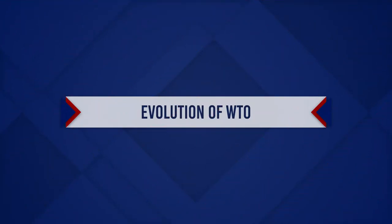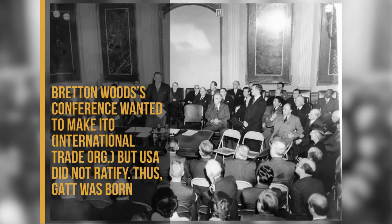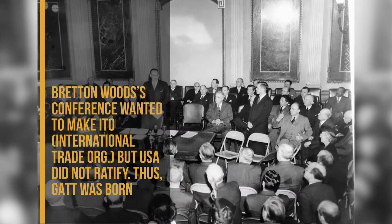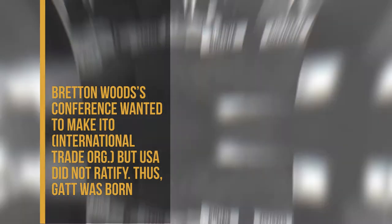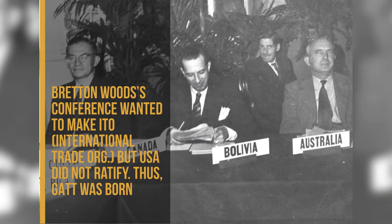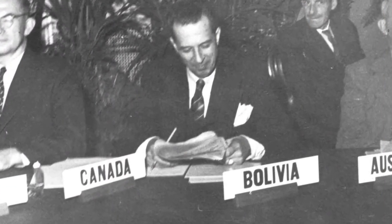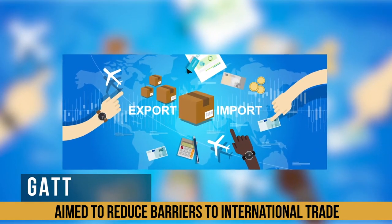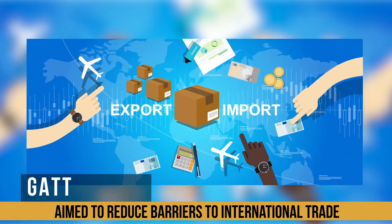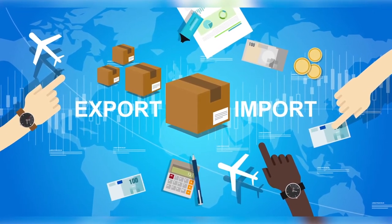Now we are going to see about the evolution of WTO. In 1944, the Bretton Woods Conference wanted to make ITO — International Trade Organization — but the United States did not ratify it. Thus, GATT was born as a stop-gap agreement. In 1947, the General Agreement on Trade and Tariffs was established, aimed to reduce barriers to international trade.